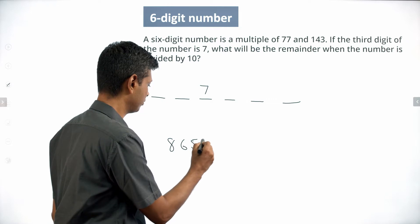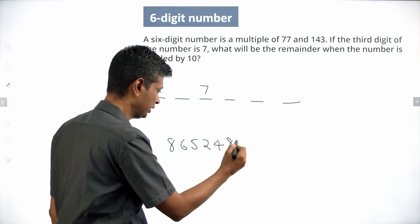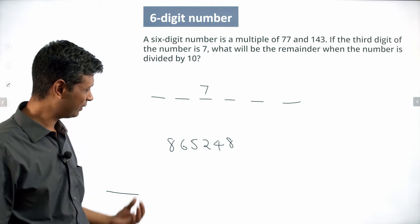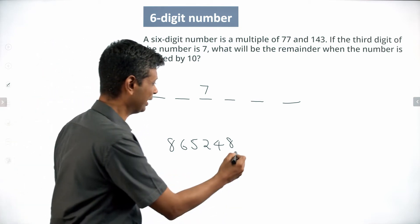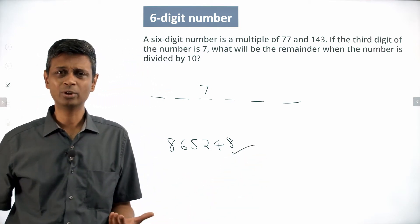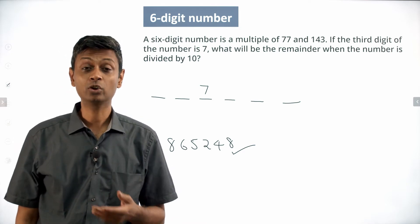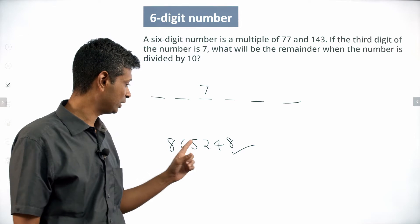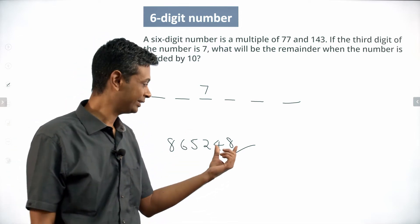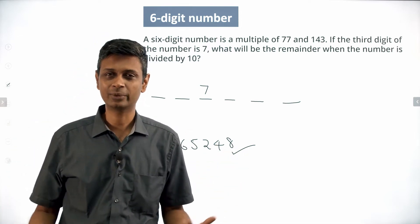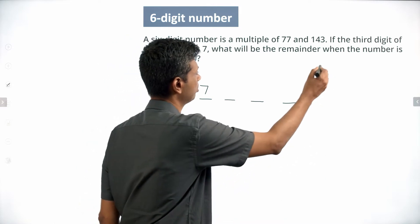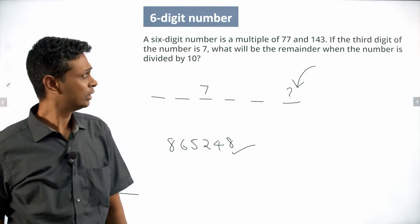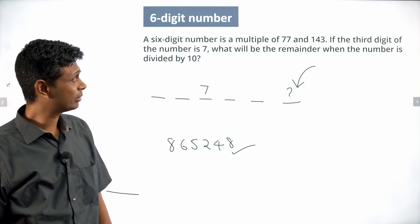Let's imagine a six-digit number: 8, 6, 5, 2, 4, 8. What is the remainder when this number is divided by 10? You divide this by 10, the remainder will be 8. Anytime you have a unit digit, that is going to be the remainder when you divide a number by 10. This number is 8,6,5,2,4 into 10 plus 8 — so effectively the question is asking: find the unit digit.